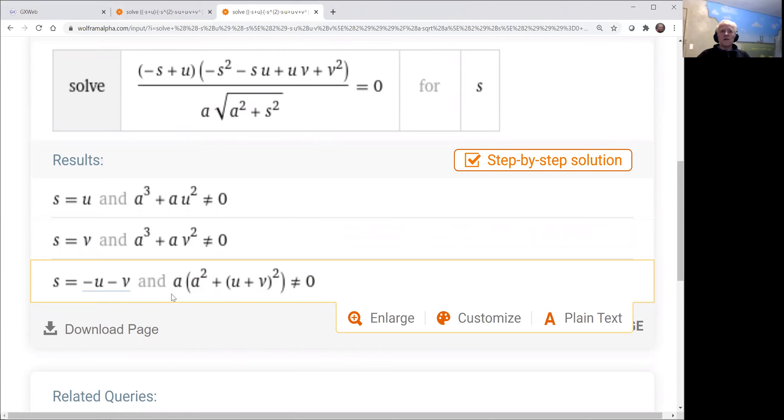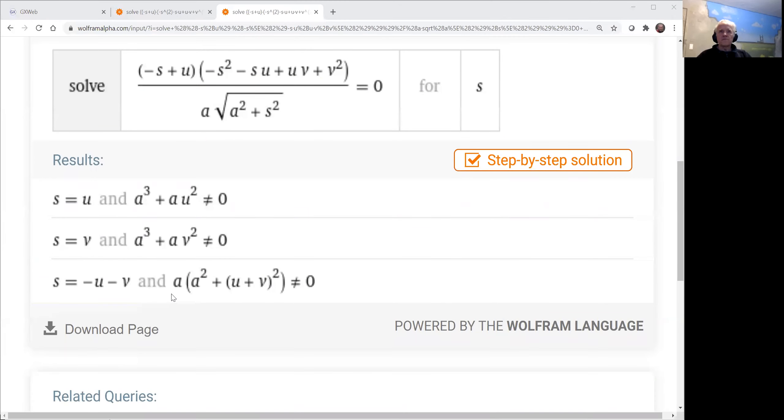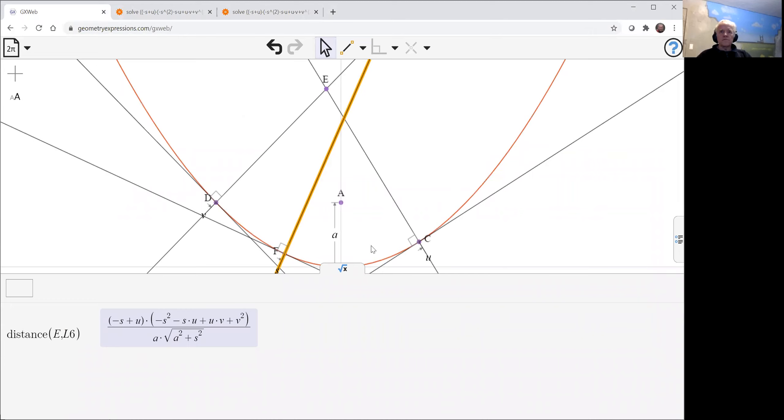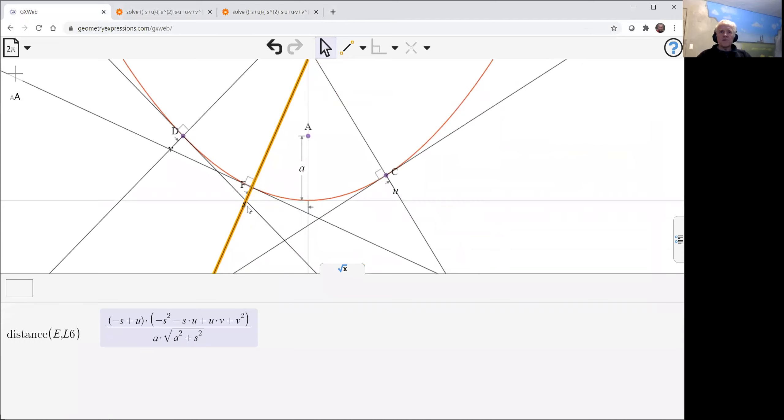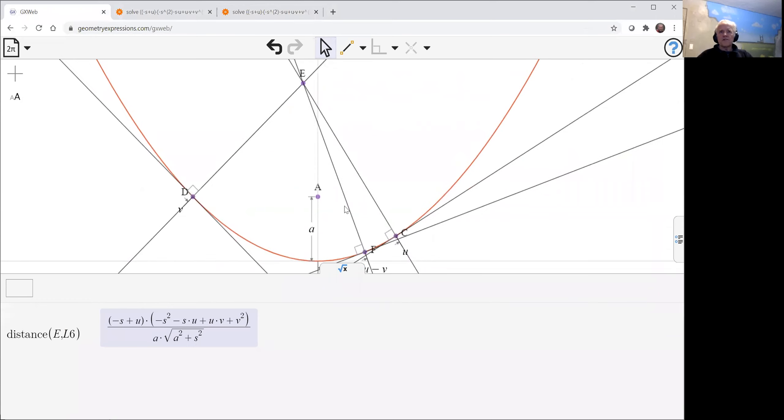So let's just put that in. Instead of s, we're going to put minus u minus v. And we can see this third location does in fact go through e.